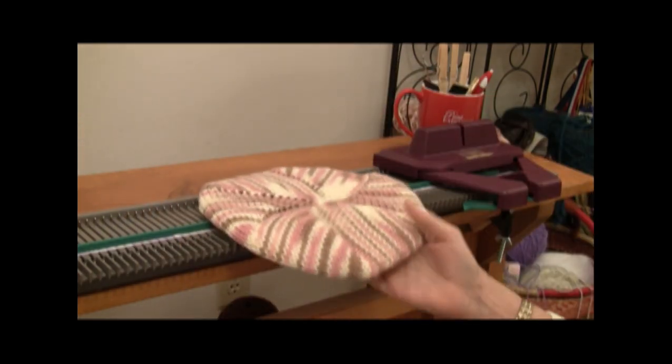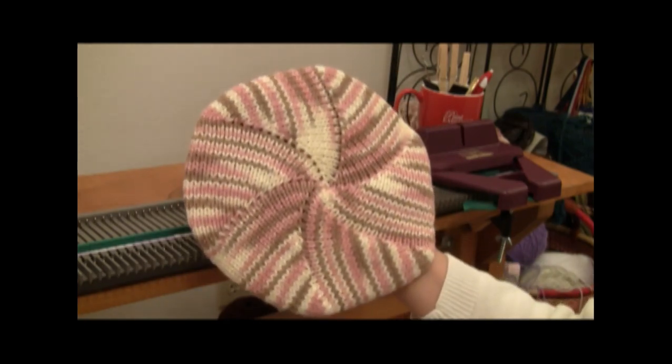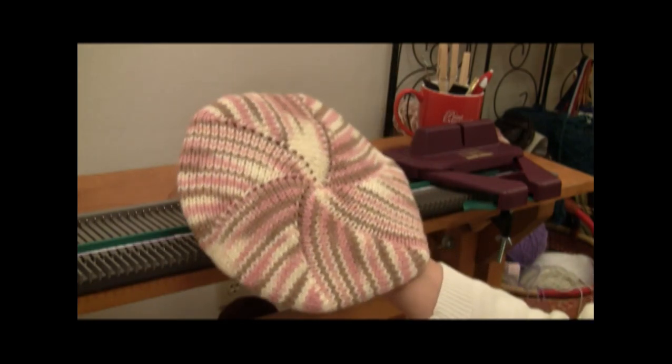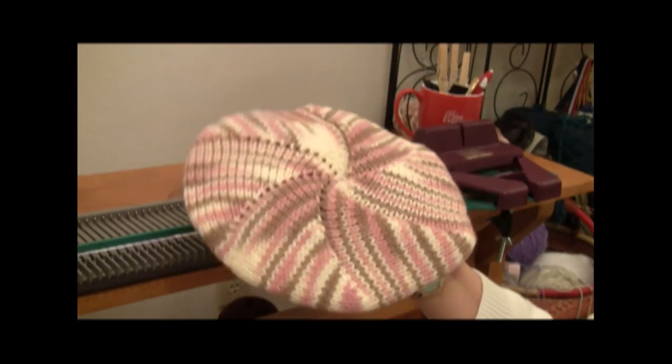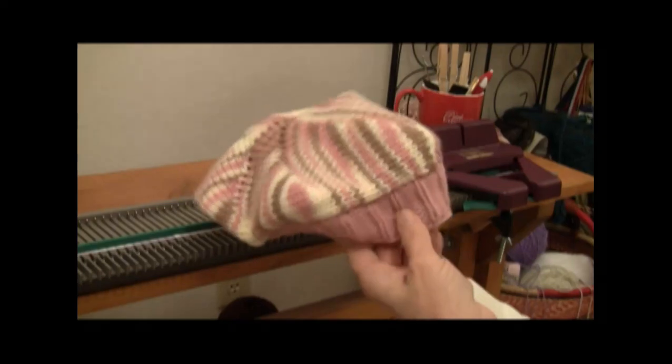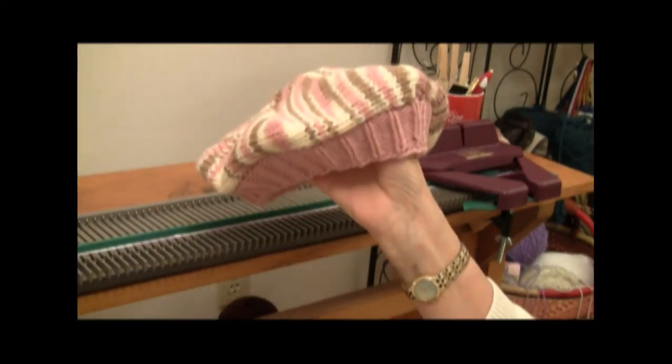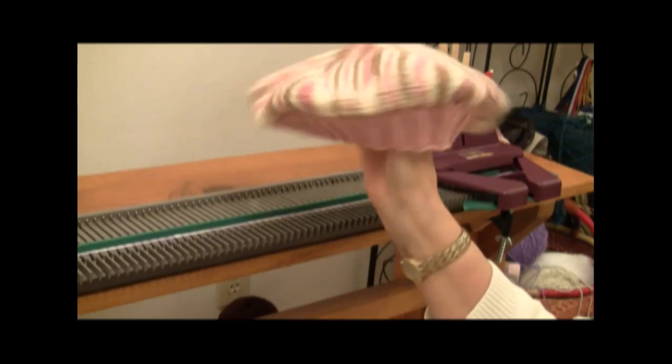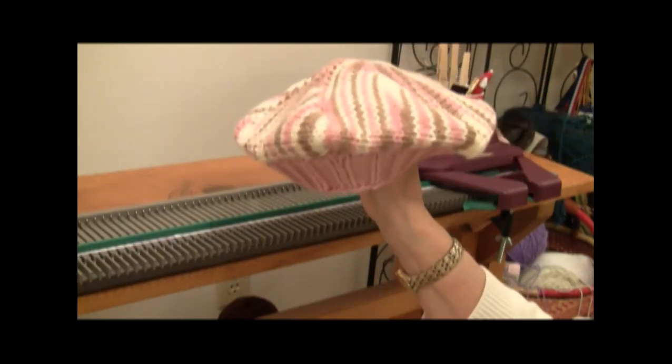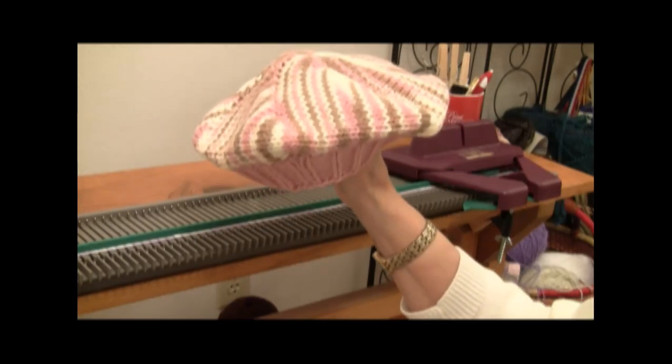This is a hat with an interesting design created by short rowing, and it has a ribbed band all the way around on the back. It is blocked over a dinner plate, and I made a whole bunch of these. I've got a lot of viewers who really like to make these, but the pattern I had in the past was a fingering weight pattern. So let's do it in worsted weight yarn on the Ultimate Sweater Machine.